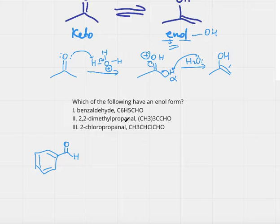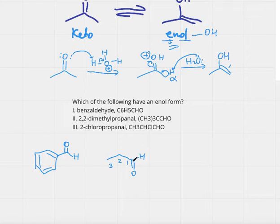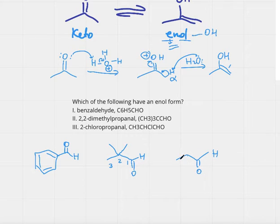Next is 2,2-dimethylpropanal. 'Anal' means we have an aldehyde, 'prop' means there are three carbons, so we draw three carbons and put an aldehyde on the first carbon. It says 2,2-dimethyl, so numbering the molecule 1-2-3 with the aldehyde group as carbon one, we add one methyl group and another methyl group at carbon two. Our third choice is 2-chloropropanol — again propanal, so we draw the aldehyde with carbons 1-2-3, and on the second carbon we have a chlorine.